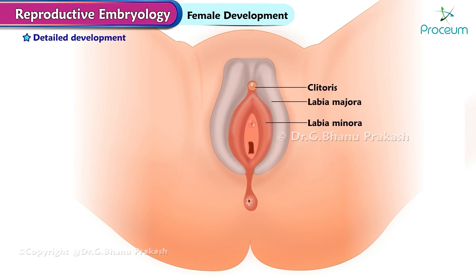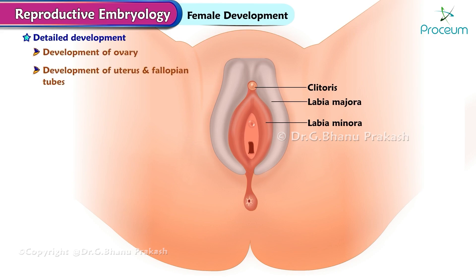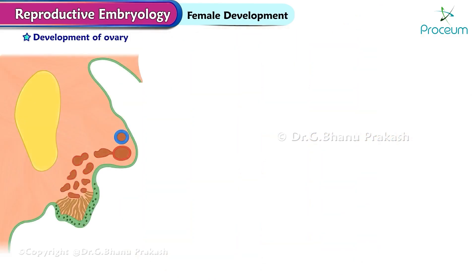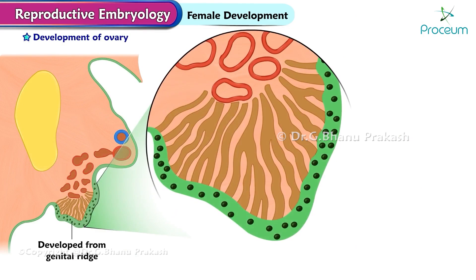Detailed development of the female genital tract will be discussed under the following points: development of the ovary, development of the uterus and fallopian tubes, development of the vagina, development of the external genitalia or vulva. The ovary is developed from the genital ridge.